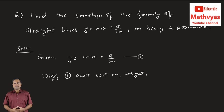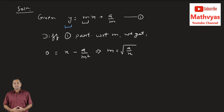On the left-hand side, y has no term in m, so its derivative is 0. On the right-hand side, the derivative of mx with respect to m is x, and the derivative of a/m is −a/m². So we get 0 = x − a/m². Simplifying, we get m = √(a/x). Let this be equation 2.